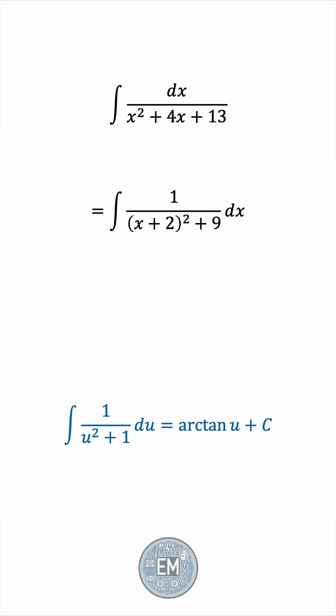In our case, the squared entity is x + 2. So let's take u to be this x + 2. du would be dx, of course. The integral becomes 1 over u² + 9 du.